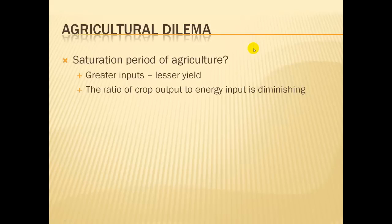What the numbers are showing is that it takes much, much more input while yields increase only slightly — or in some areas are diminishing. The ratio of crop output to energy input is diminishing. We have to put in all that fossil fuel energy for mechanized labor, all that energy for seed production, fertilizer, and water. What we're getting out in terms of energy units is not equal to what we're putting in, and year by year that ratio grows larger in terms of input versus output.